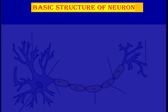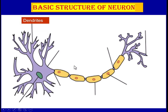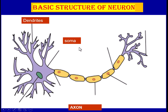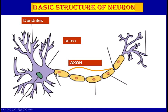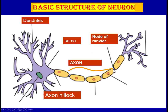The basic structure of the neuron consists of dendrites, which are branching projections from the soma or cell body. There is also a thread-like structure called the axon, which originates from the body and then branches. The axon is covered by the myelin sheath, and between sections of the myelin sheath there is an uncovered area called the Node of Ranvier.